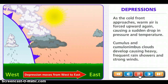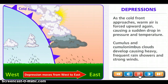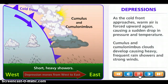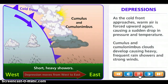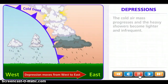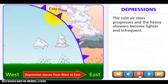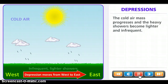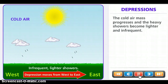As the cold front approaches, warm air is forced upwards again, causing a sudden drop in pressure and temperature. Cumulus and cumulonimbus clouds develop, causing heavy, frequent rain showers and strong winds. The cold air mass progresses and the heavier showers become lighter and infrequent.